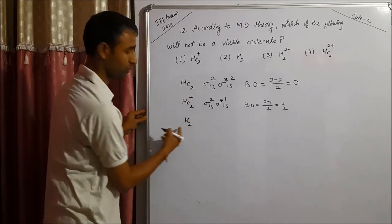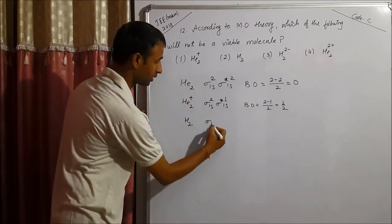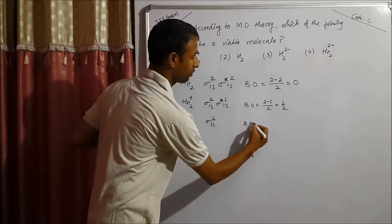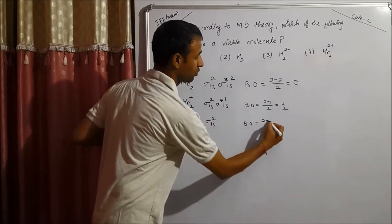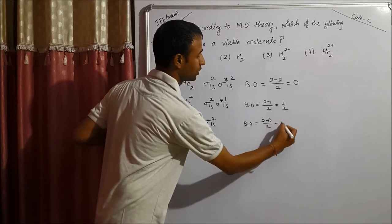In case of H2, we have 2 electrons only, it is sigma 1s2, and it is a well-known molecule, hydrogen molecule, (2 minus 0) over 2, means 1.